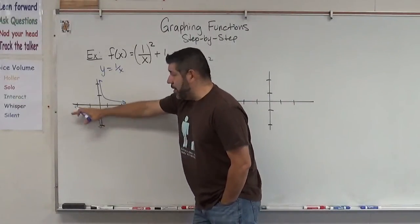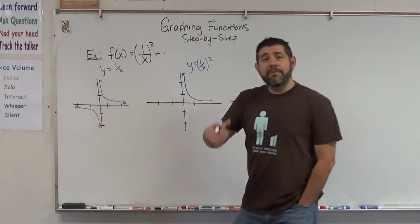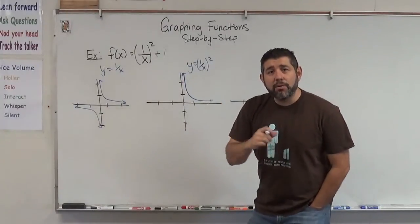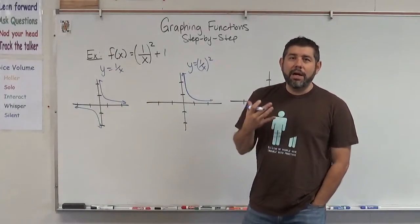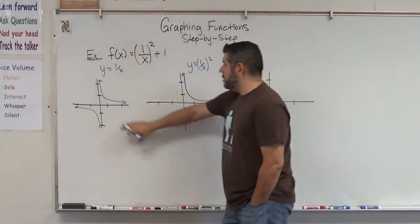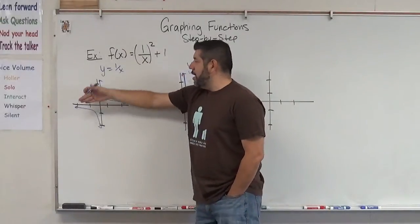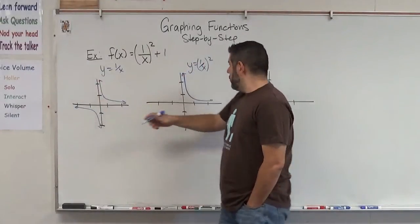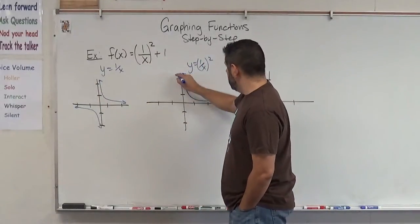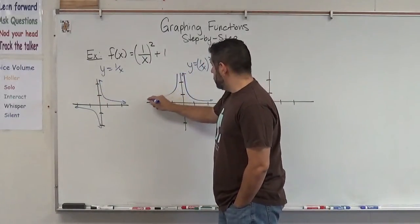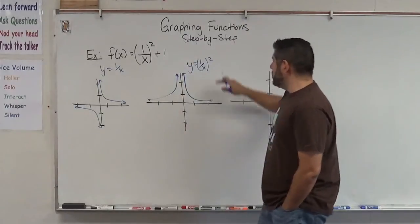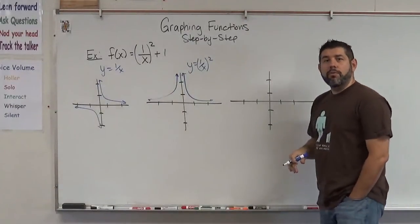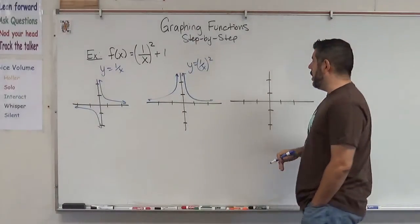Down here we have a negative portion — it's below the x-axis. When it's negative, squaring makes it positive. So we actually take this and flip it up here. And that's our graph of 1 over x squared.